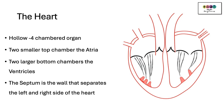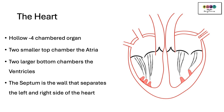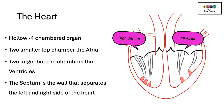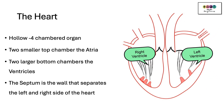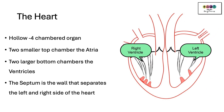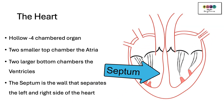The heart is a hollow four-chambered organ. An organ is a structure that's composed of different tissue types and they all work together to carry out a particular function. The top two chambers are the atria — we have the left atrium and the right atrium. The larger two bottom chambers are the ventricles, the left ventricle and the right ventricle. The septum is the wall that separates the left and the right side of the heart.